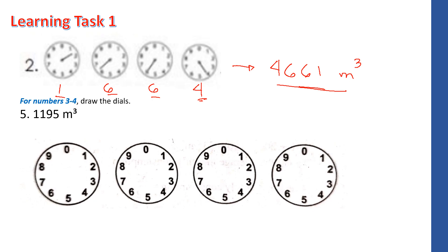For number 5 in learning task 1, the last dial reading is 1 — either exactly on 1 or between 1 and 2. The next dial is also 1. Then we have 9 — exactly on 9 or between 9 and 0. And the last dial is 5 — exactly on 5 or between 5 and 6. Drawing these dials for the water meter reading completes our answer for learning task 1, number 5.